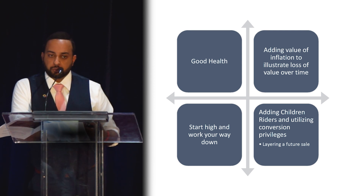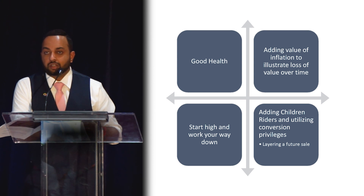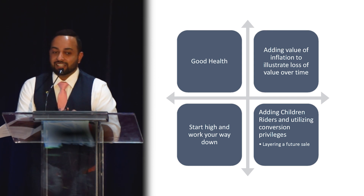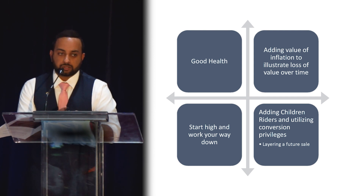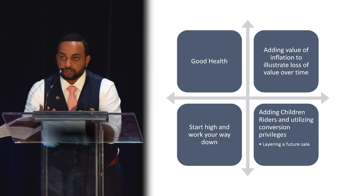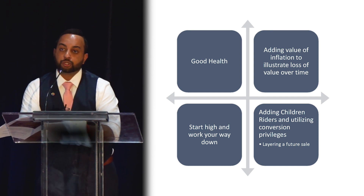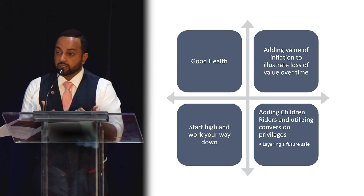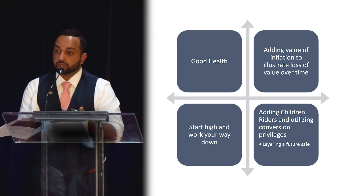Another tip: add the value of inflation to illustrate the loss of value over time. Inflation is at 2%, so tell your client: 'A funeral that costs $30,000 today will cost considerably more 30 to 40 years down the road — how about we inflate this a little bit?' Also, adding children's riders and utilizing conversion privileges can work well. Some providers allow conversion of five times the children's rider, ensuring the child remains insurable in the future.